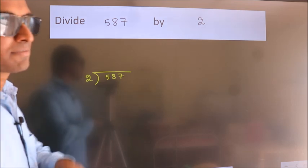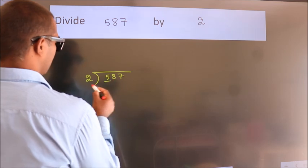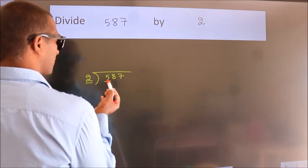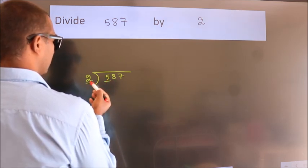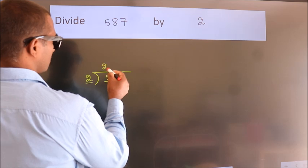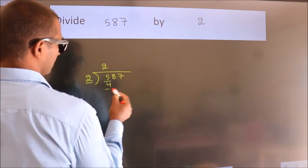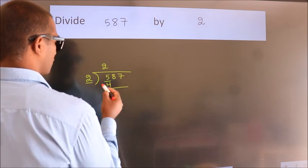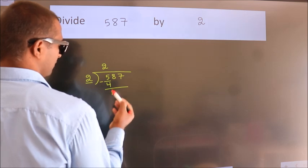Next, here we have 5, here 2. A number close to 5 in 2 table is 2 2s, 4. Now, we should subtract. We get 1.